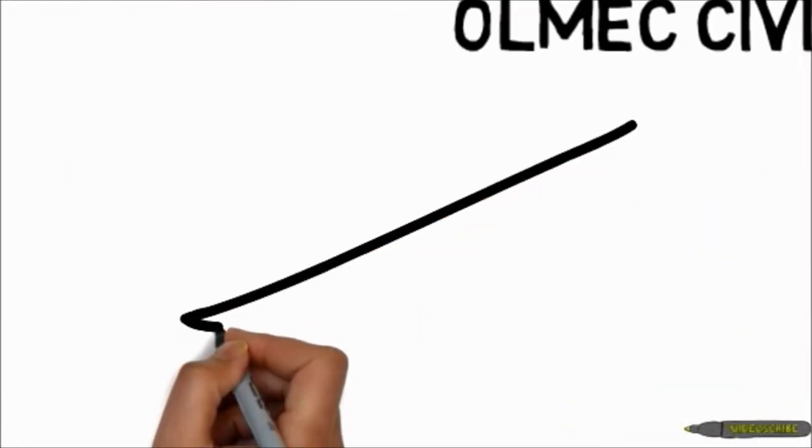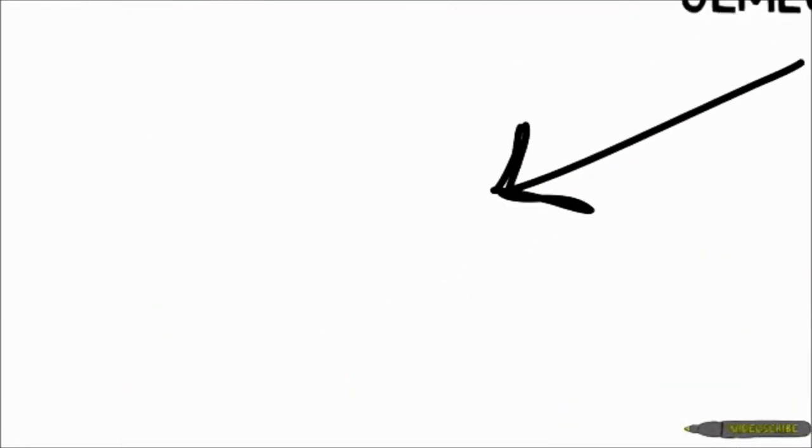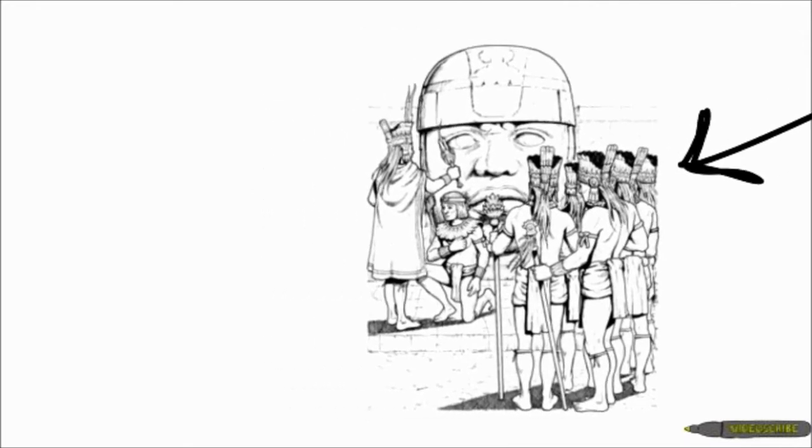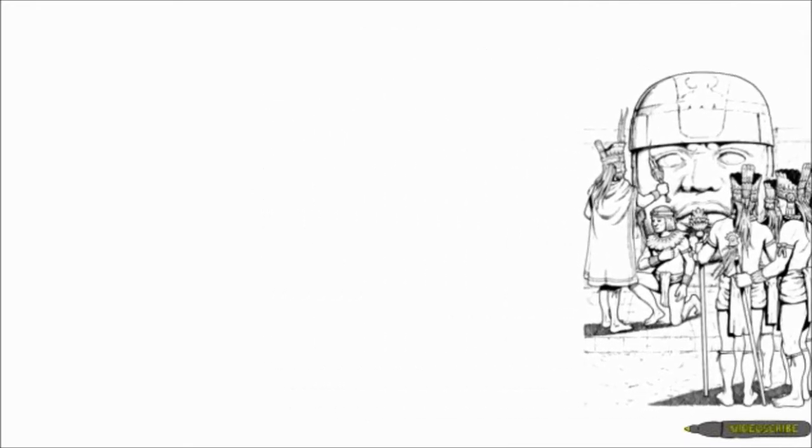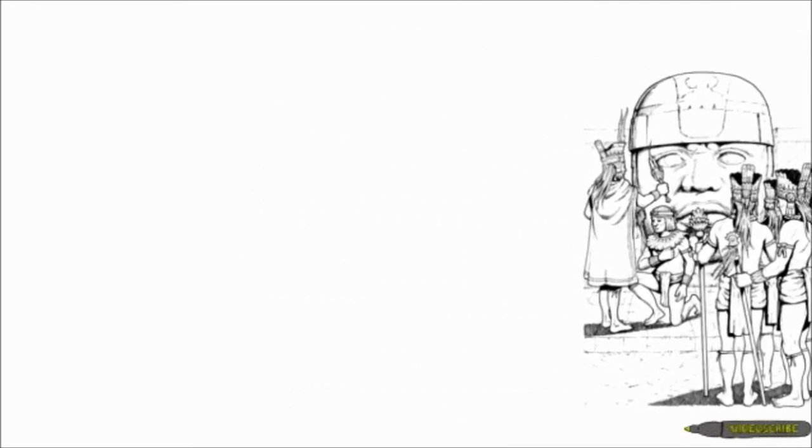Political and religious elites emerged using their authority to build irrigations, canals, and monuments. Their most lasting impression upon their history are their colossal heads which were built to memorialize individual rulers.